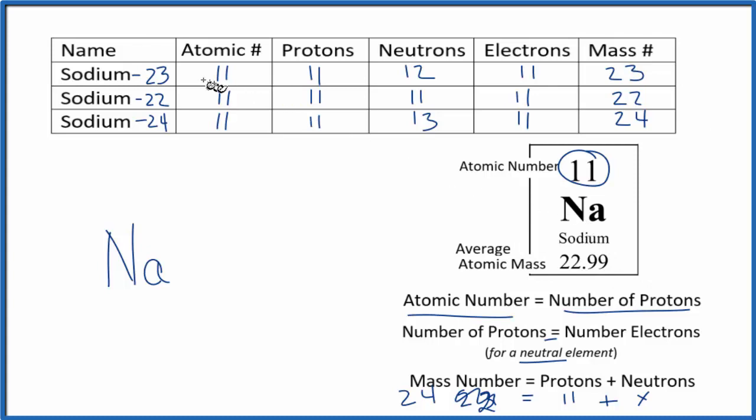Sometimes we want to write the notation for the specific isotope. This is an average of the three. If we want to write the notation for the specific isotope called nuclear notation, here's how we do it. We put 23, the mass number, up here. And then down here, we put the atomic number 11. So this is sodium-23.